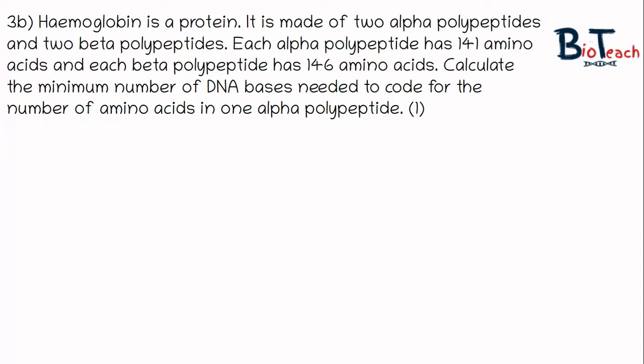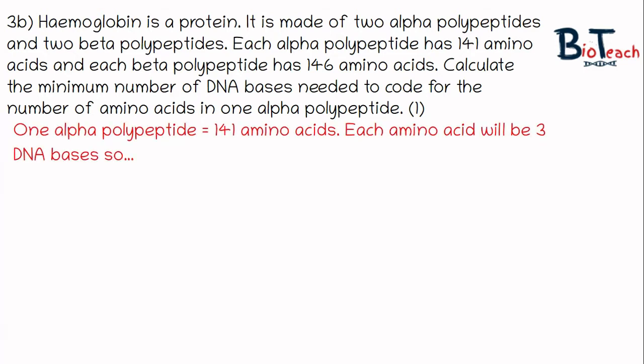The next question is 3b. It gives information about hemoglobin with amino acids in the alpha and beta polypeptides. The question for one mark asks you to give the number of bases needed to code for the number of amino acids in one alpha polypeptide. Most students who get this wrong don't read the question properly. One alpha polypeptide is 141 amino acids, so each amino acid will be three bases, so all we need to do is multiply 141 by three to get the final answer of 423.